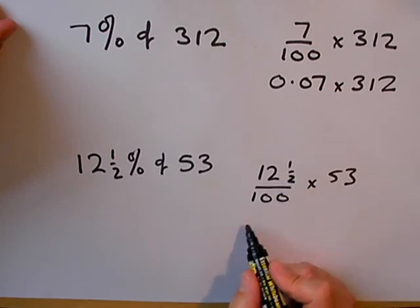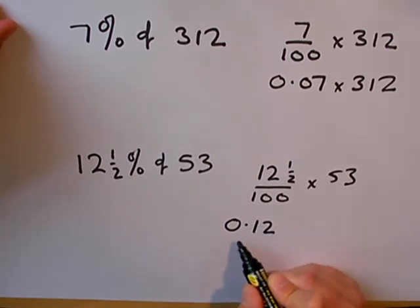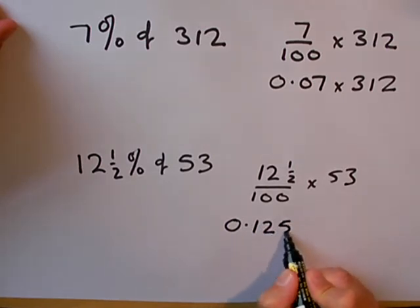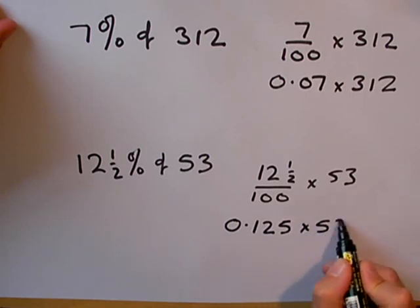Now, if you want to write this as a decimal, 0.12 is 12%, 0.125 is 12.5%. We need to multiply that by 53.